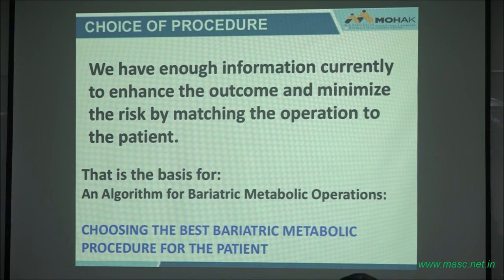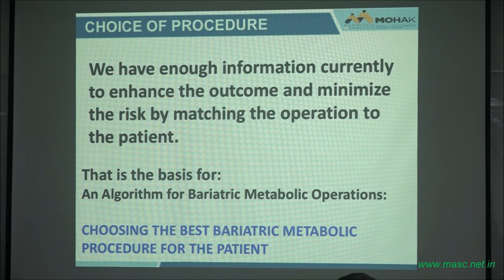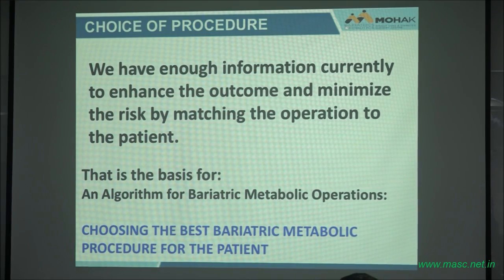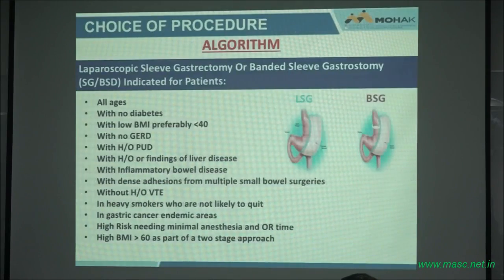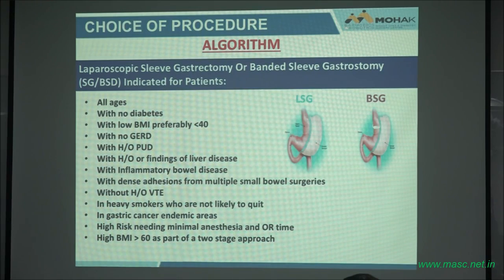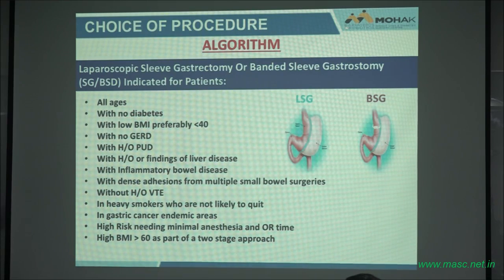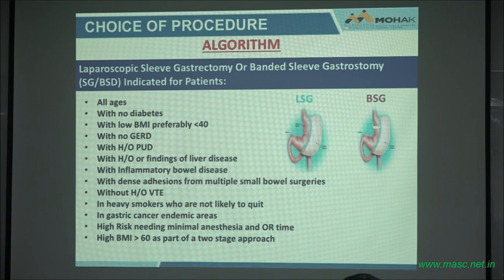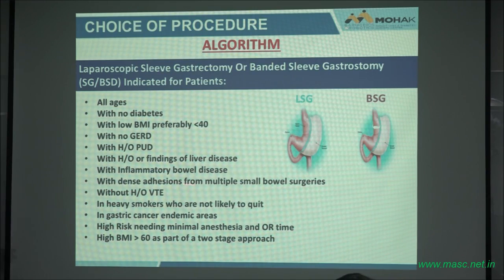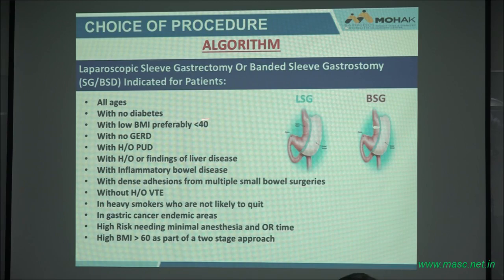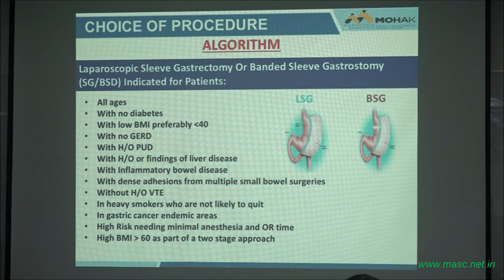This is the basis for an algorithm. We at Mohawk have an algorithm for choosing the best operation for the patient — that was the topic of my talk. All I did was lay the foundation. How do I choose the procedure? If a patient walks in with certain characteristics, they would probably have a sleeve, and if we're going to do a sleeve, we'll preferably do a banded sleeve because of the long-term effects. If they don't have diabetes, they get a sleeve — because the sleeve treats about 50% will respond.